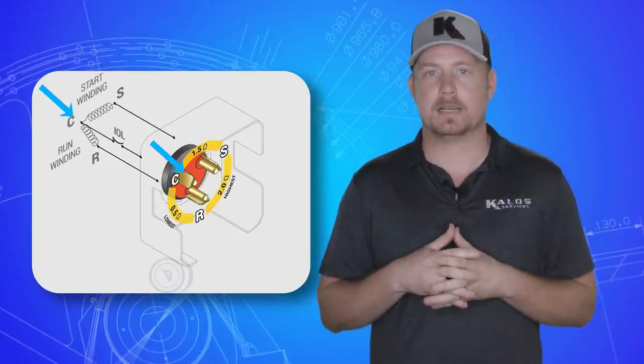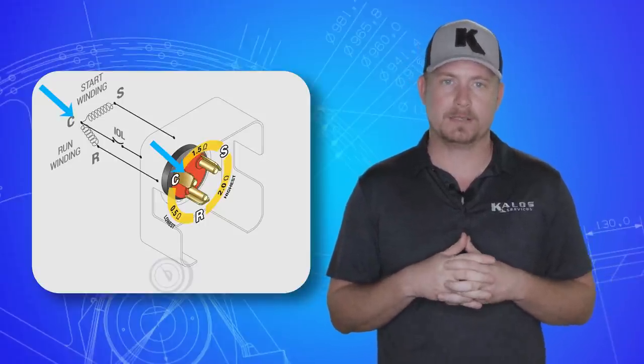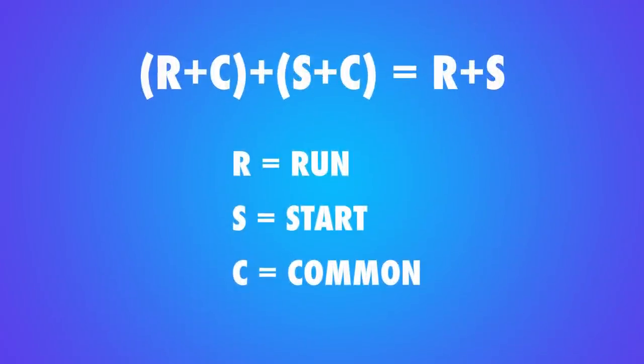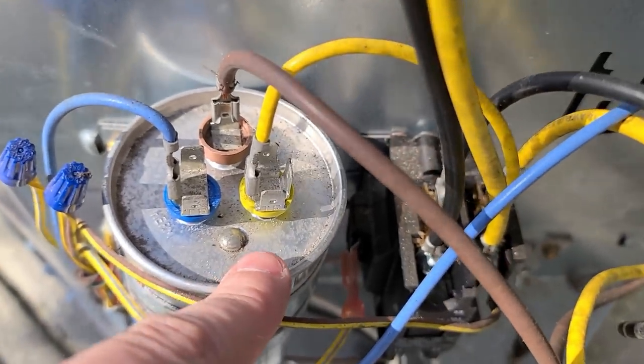In the compressor, it's the common point between the run and start windings. This is why R plus C plus S minus C equals R plus S. If you ohm a compressor, the C terminal of a dual capacitor is actually fed from the opposite leg of power as the C terminal on the compressor.